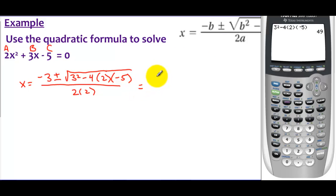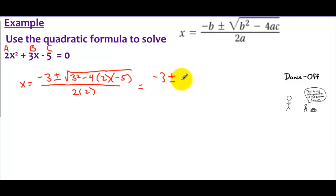In one step, it's going to look like plus or minus—instead of all that underneath the radical, I can say that's just equal to 49. And the bottom, you can also simplify: 2 times 2 is 4.